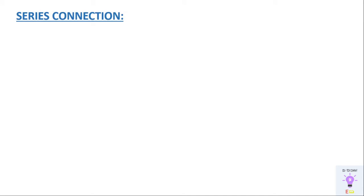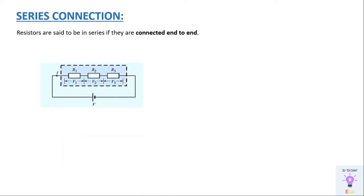The next topic is series connection of resistors. Resistors are said to be in series if they are connected end to end. Resistor R1 is connected to R2, which is connected to R3, and it is connected back to the battery. This end is connected to the other end of resistor R2, and the end of R2 is connected to the other end of R3 — they are connected from one end to another end, and that is called series connection.